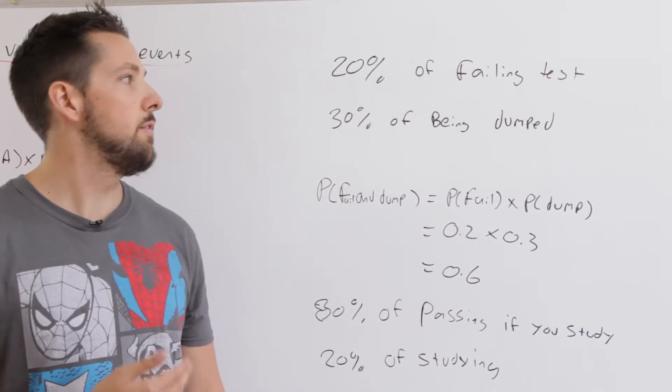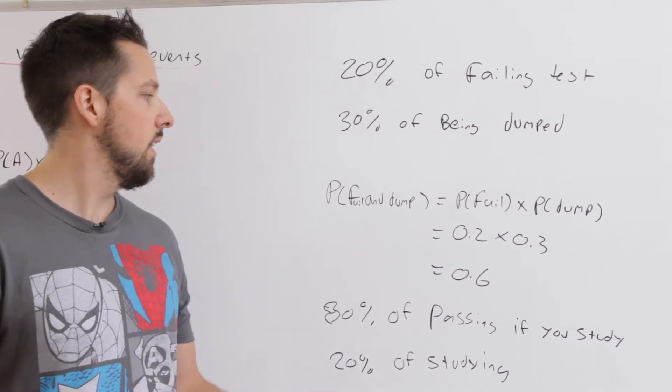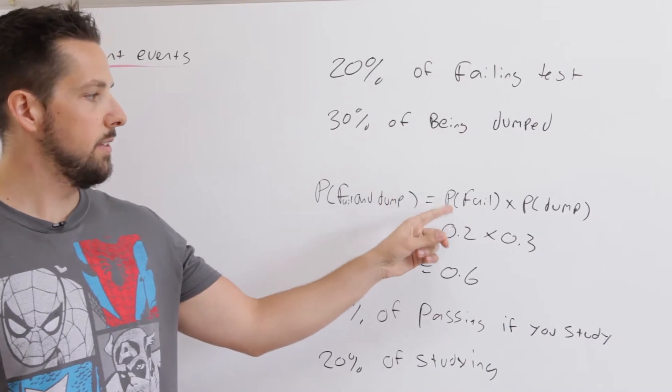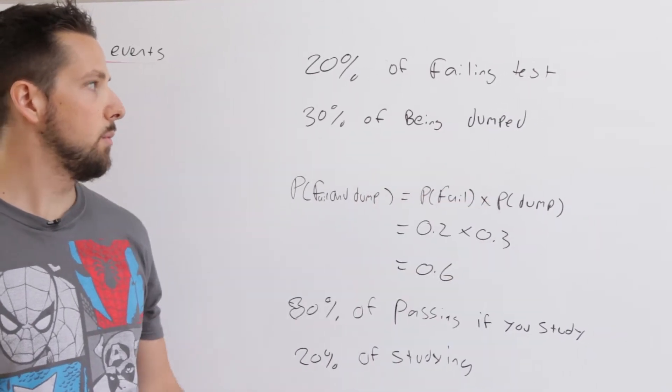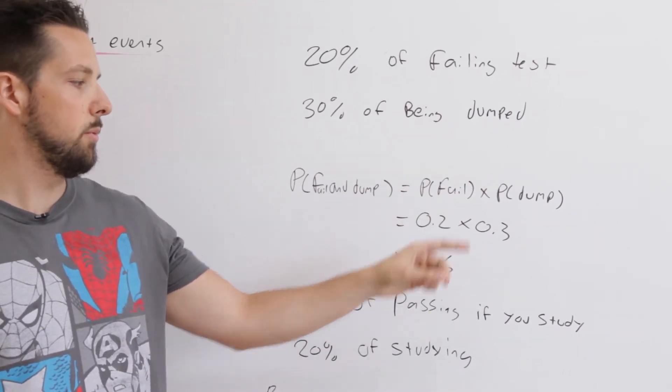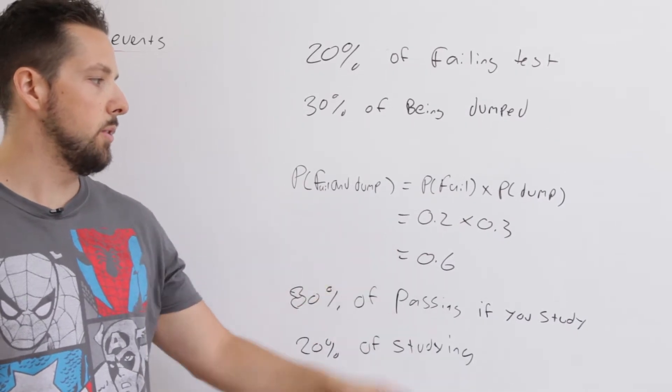To find the probability of failing your test and being dumped, we just do the probability of failing times the probability of being dumped, which is 0.2 times 0.3, which equals 0.6.